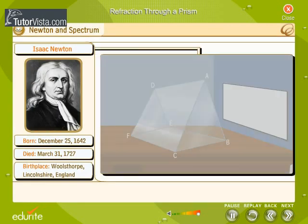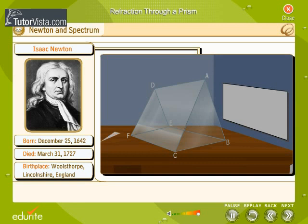It was Sir Isaac Newton who first observed that when a beam of white light or sunlight is refracted by a glass prism, it splits into seven different colors. This shows that white light is composed of seven different colors.